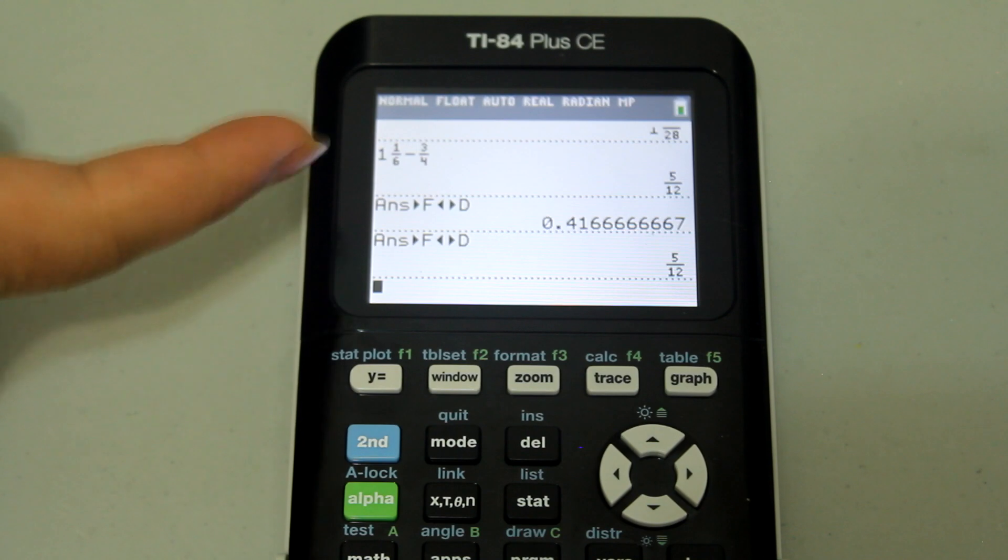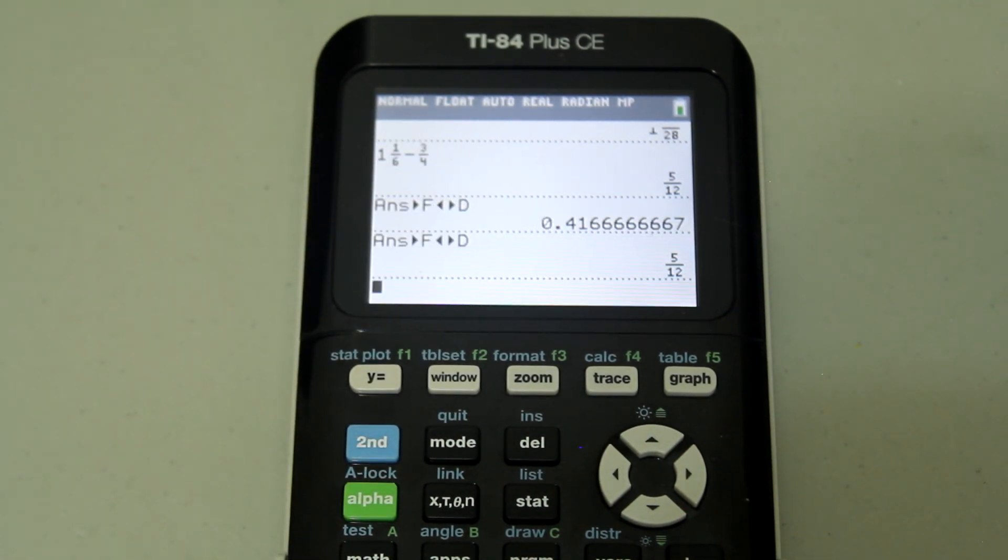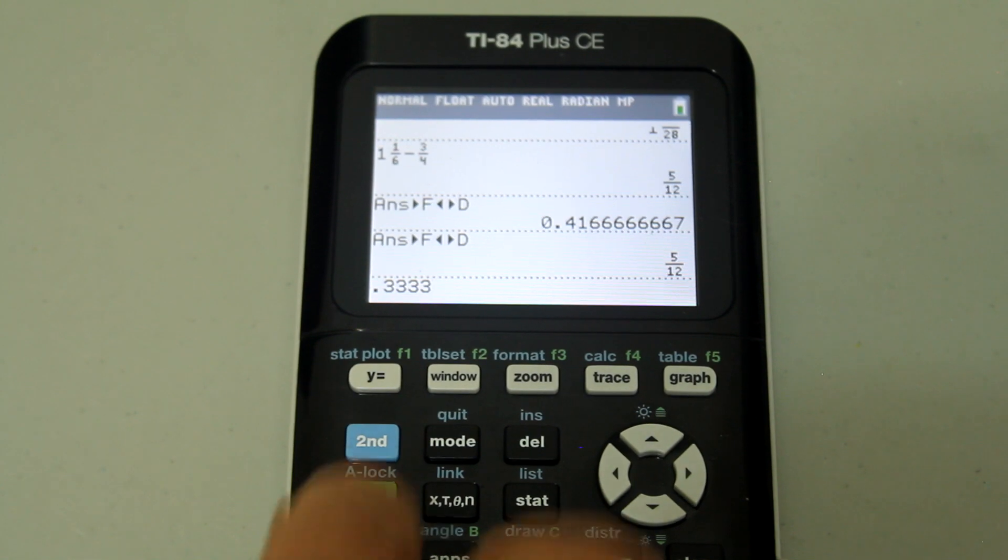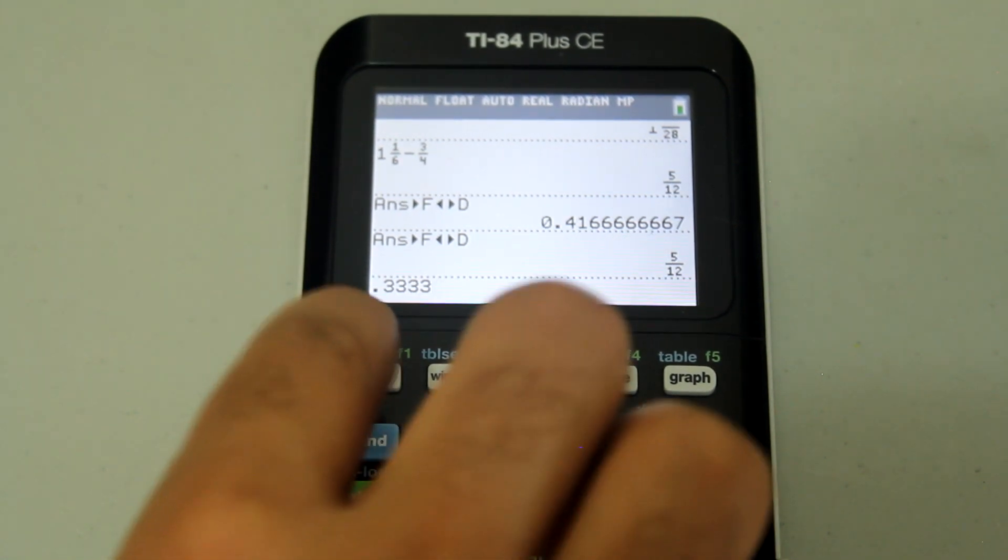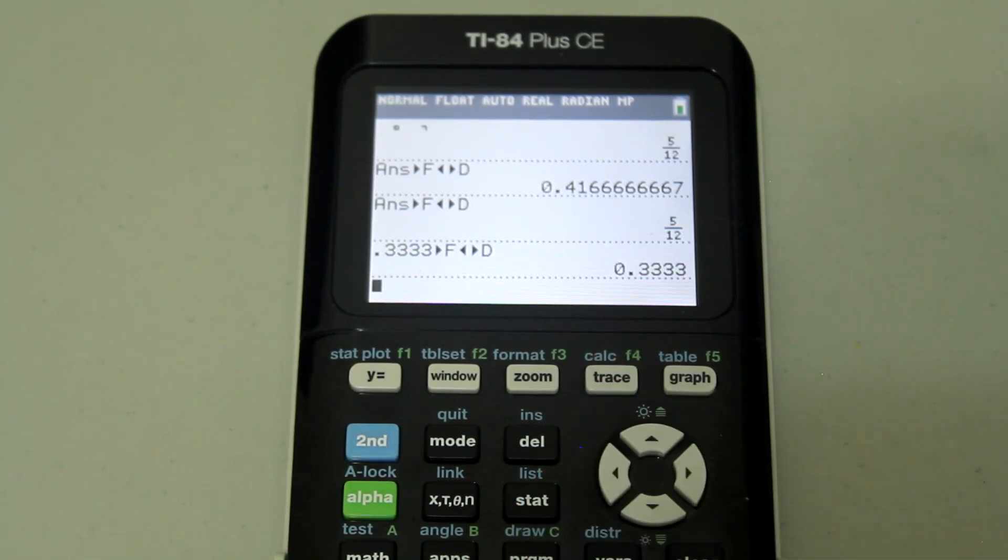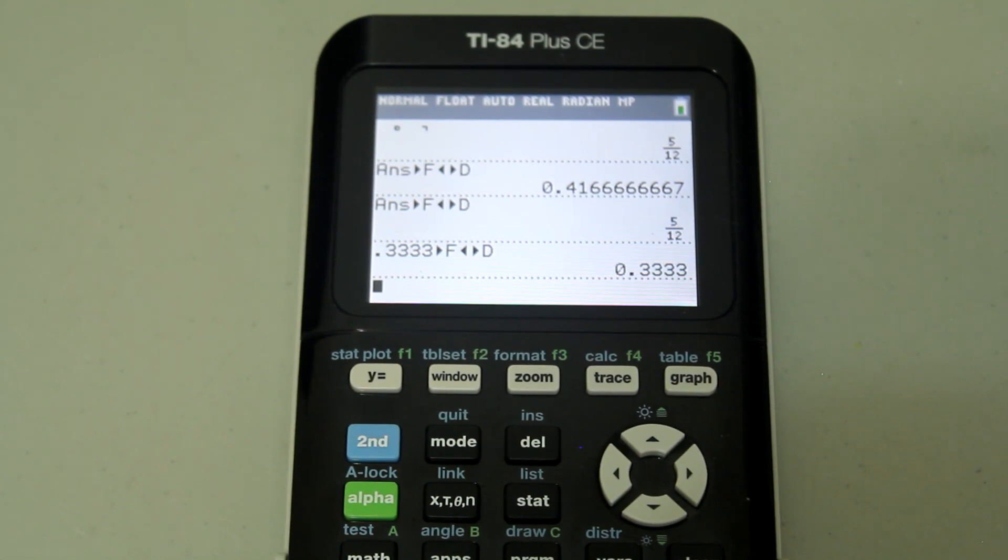So it took this decimal and made it a fraction. But if you typed in a repeating decimal like 0.333, we know that that's one third. But since it is a repeating decimal, it's not exact. So if you wanted to go in and use the feature alpha y equals and then a number four, notice it just leaves it as a decimal because it wasn't an exact decimal that could be converted to a fraction. So just keep that in mind.